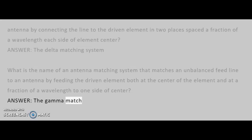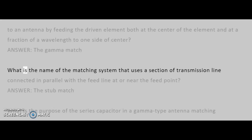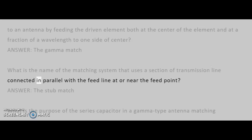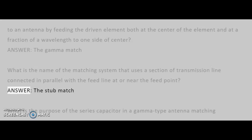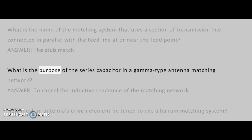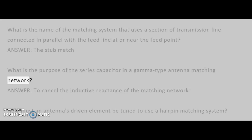Answer: The Gamma Match. What is the name of the matching system that uses a section of transmission line connected in parallel with the feed line at or near the feed point? Answer: The Stub Match.